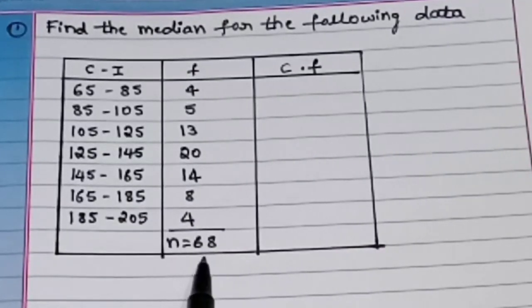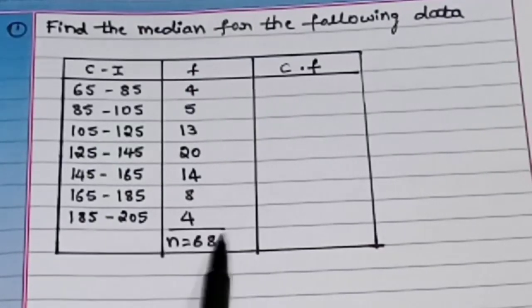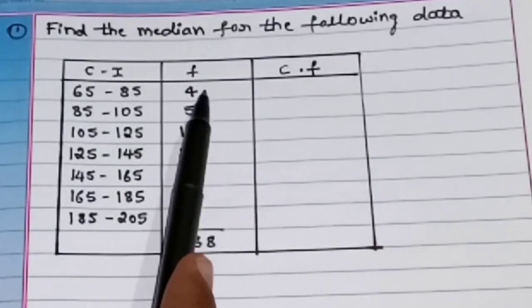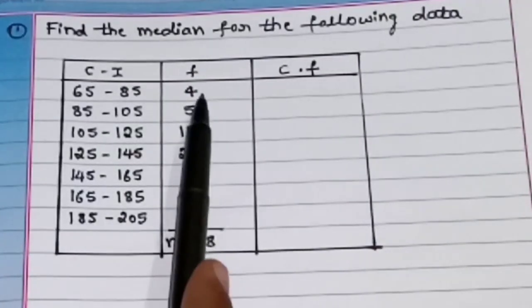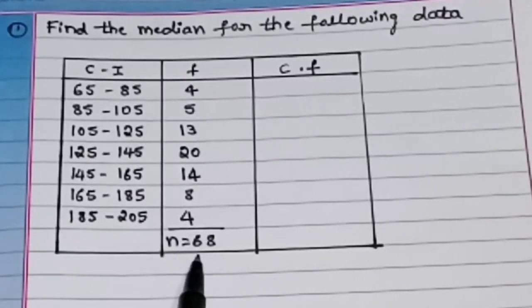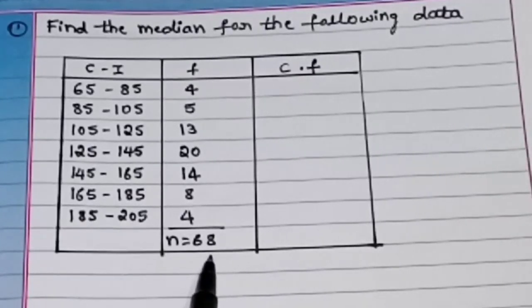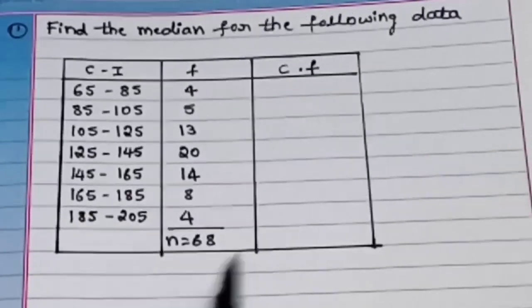So what is n? Here n equals 68 — nothing but the total number of frequencies. If you add all the frequencies, 68 will come. So that is called n equals 68.